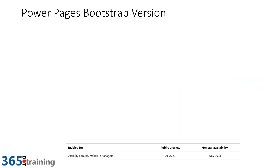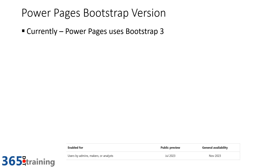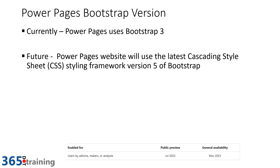Another feature that I think will be popular is the Power Pages Bootstrap version update. Currently Power Pages uses Bootstrap 3 as its styling framework. Bootstrap is now up to version 5, and this older version has been a source of contention because people want to take advantage of what Bootstrap 5 offers. With this upcoming release, Power Pages will start using the latest CSS from Bootstrap version 5, allowing sites to use more current styling concepts.